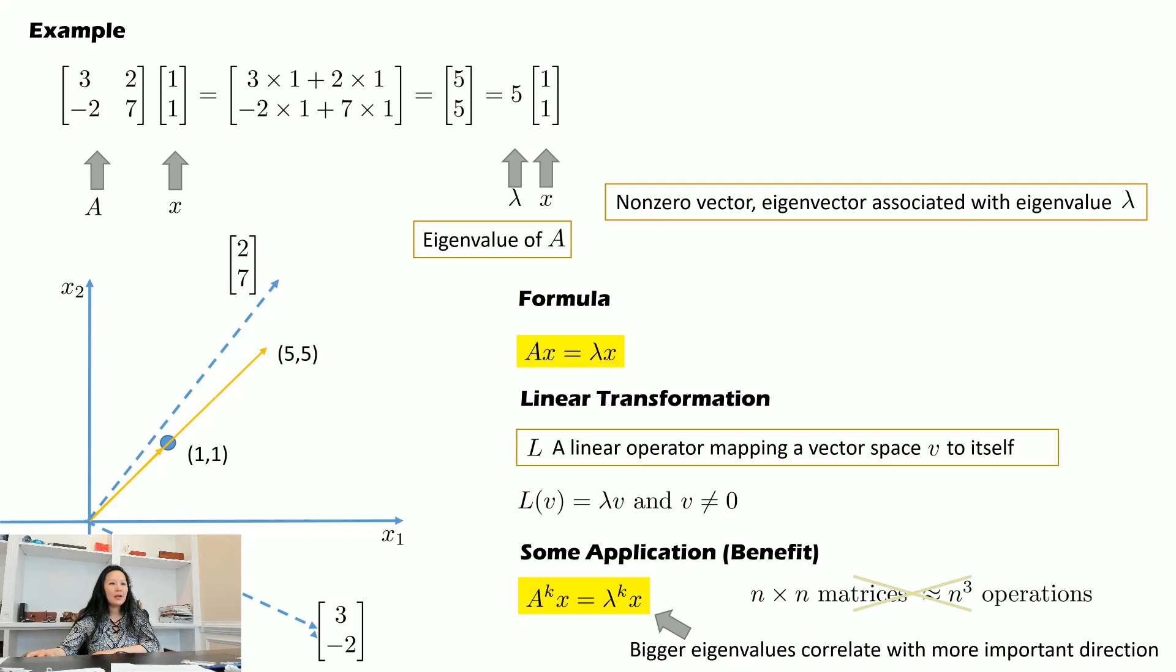Now, the bigger eigenvalues will correlate with more important directions. Let's revisit some of the topics you learned in class about PCA. PCA is Principal Component Analysis. What we need is a matrix, and this matrix will give us some vectors in the directions of the new data. So we have a data plot here in two-dimensional space.